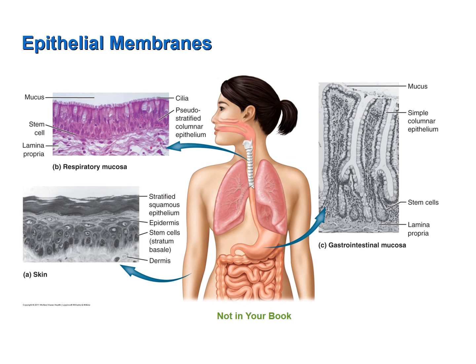Here is a figure from your book to summarize the epithelial membranes. The cutaneous membrane or skin covers the entire body surface. Mucous membranes line the body cavities that open to the outside world, such as the respiratory system or gastrointestinal tract. Serous membranes line the body cavities closed to the external environment and cover the organs found in those cavities. All epithelial membranes consist of an outer layer of epithelial tissue and an underlying layer of connective tissue.